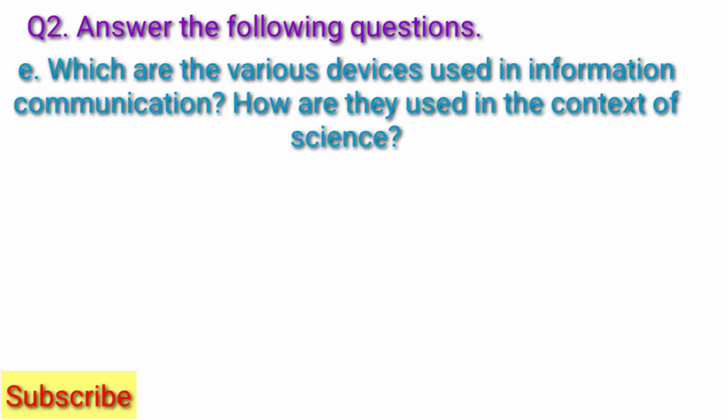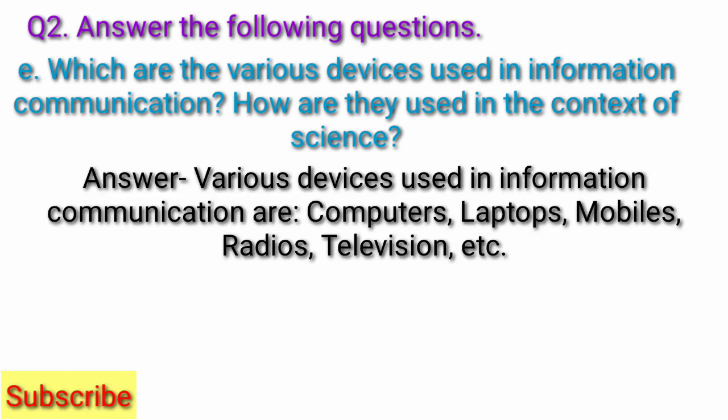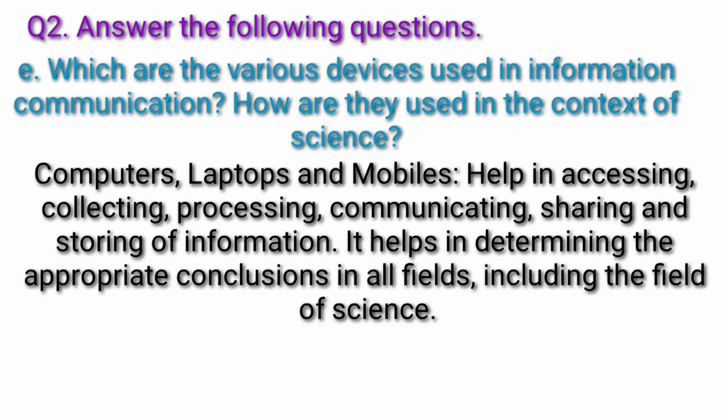Question e: What are the various devices used in information communication? How are they used in the context of science? Answer: Various devices used in information communication are computer, laptops, mobiles, radios, television, etc. Computers, laptops and mobiles help in assessing, collecting, processing, communicating, sharing and storing of information. It helps in determining the appropriate conclusions in all fields including the field of science.